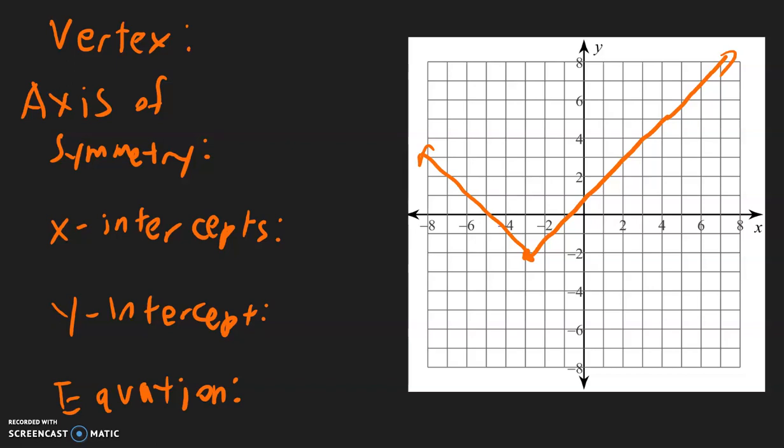In this video, I will show you how to describe the attributes of the graph of an absolute value function. You know you have an absolute value function when it looks like a V — it can either be a regular V or an upside down V.